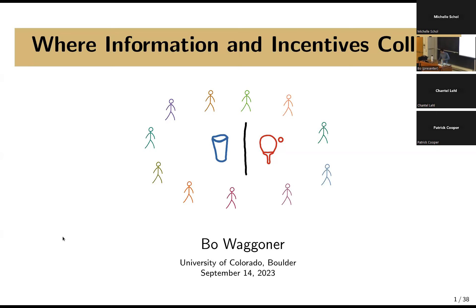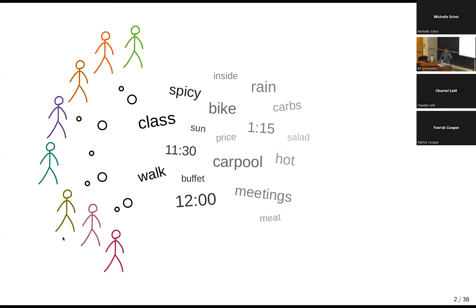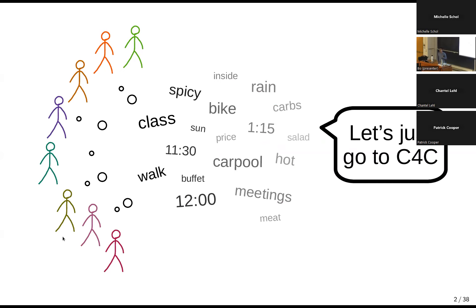I want to start with an example. If you think math problems are hard, try to solve this problem: get a group of people in your lab to agree on where to go to lunch. It's a difficult problem. The mathematics of the problem — it's a constraint satisfaction problem — is pretty easy to solve. But gathering the information you need, navigating people's preferences and constraints, and maybe strategic behavior — that's what makes this problem difficult.